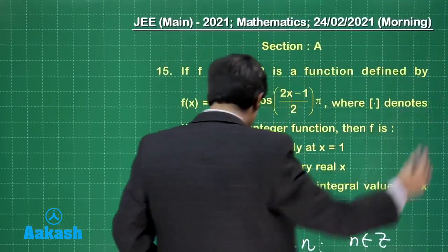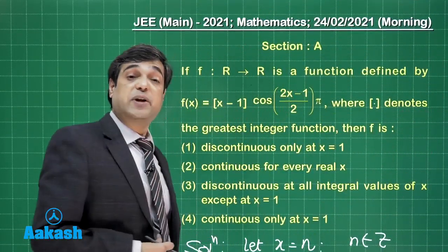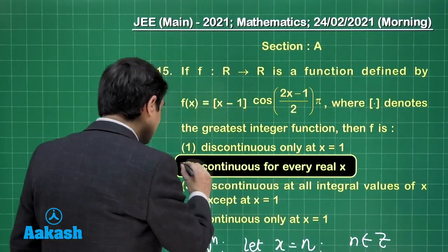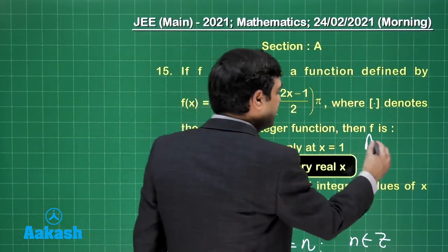So what we observe here, it is continuous everywhere. So the correct answer from the given options we can choose as option number 2. So I am sure this question is also clear.